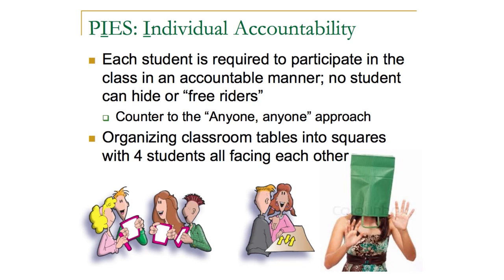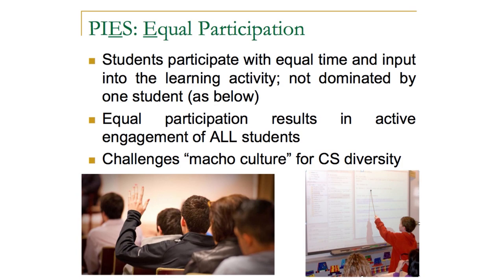It's counter to the 'anyone' approach of traditional classrooms. One way to facilitate individual accountability and other goals of PIES is to break the classroom up with individual tables aligned so students are facing each other in pairs — for example, four students surrounding a table in two pairs. Equal participation is another core topic of PIES, where students each have an equal amount of time to participate, have their voices heard, and their thoughts considered. This also helps challenge the macho culture in computer science by giving all students a voice.